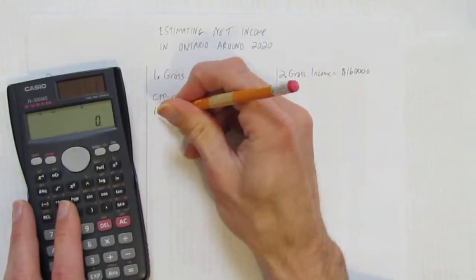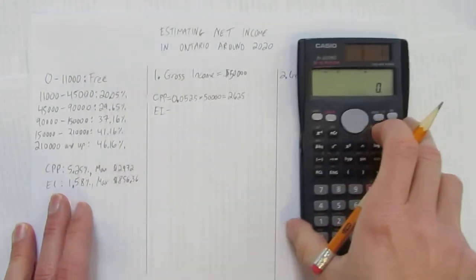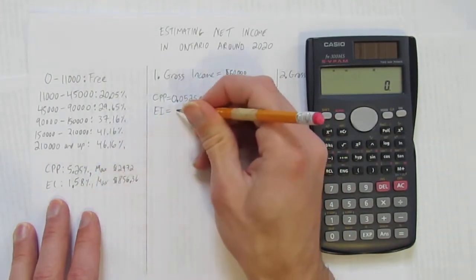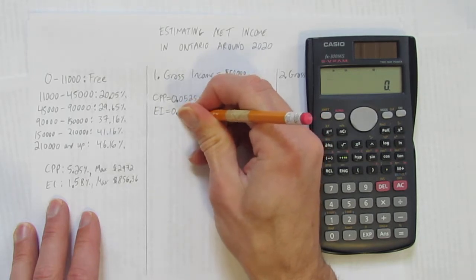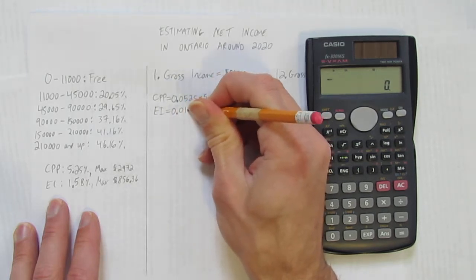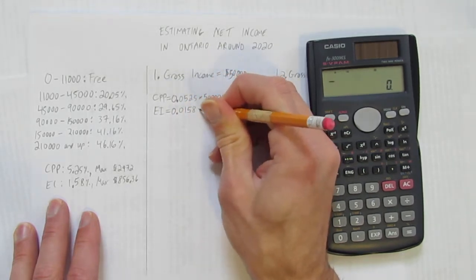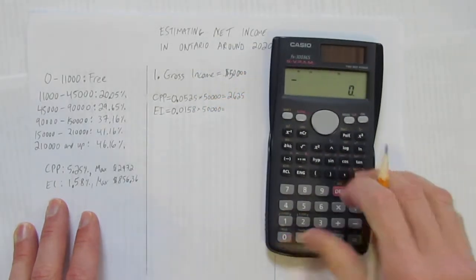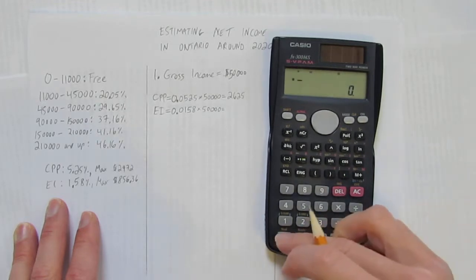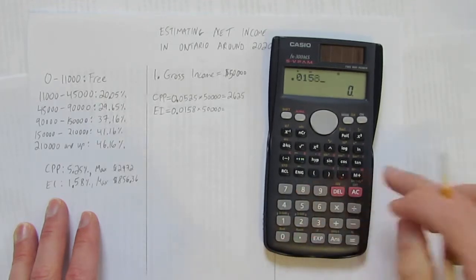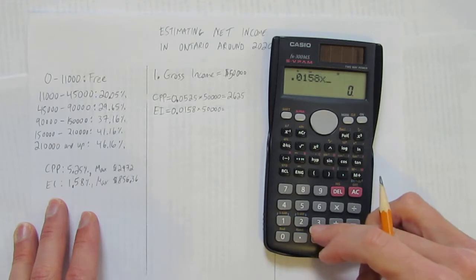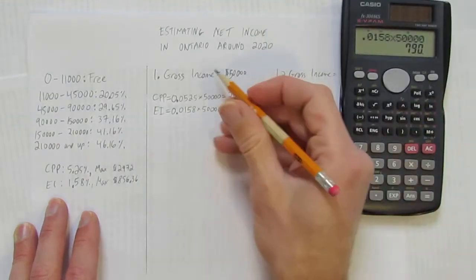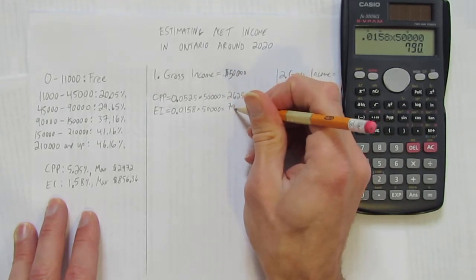When we go to calculate employment insurance, employment insurance is 1.58%. So divide that by 100 or move the decimal over twice to get 0.0158. And we multiply that by $50,000. So 0.0158 times 50,000 gives $790.